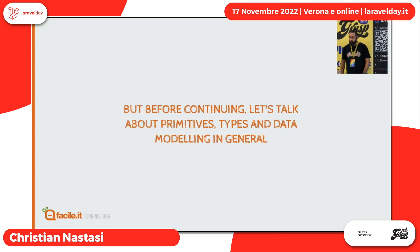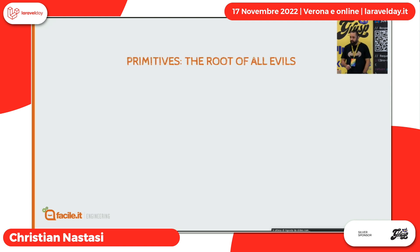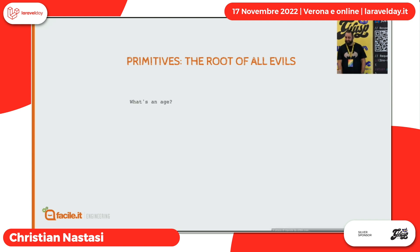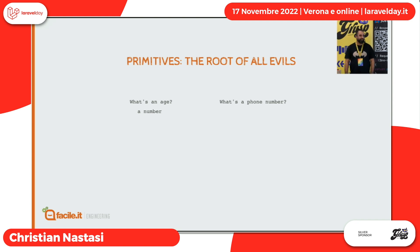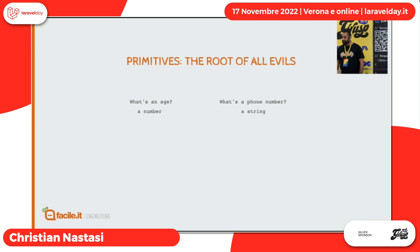Altro problema: l'inconsistenza. Prima di continuare, faccio un piccolo passo indietro. Vorrei parlare un attimo dei concetti di tipi primitivi e data modeling. Momento quiz: che cos'è un'età? E che cos'è un numero di telefono? Un numero giusto? Alzi la mano chi è d'accordo che l'età è un numero. E il numero di telefono — è una stringa, giusto? Perché c'è il più, ci possono essere gli slash, ci possono essere gli spazi.